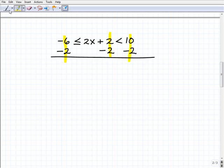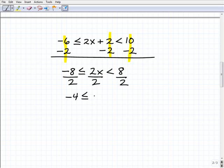Just as if I'm solving an equation, I'm going to add down. I get negative 6 plus negative 2, negative 8 is less than or equal to 2x. This is less than 10 plus negative 2 is 8. So now I need to divide everything by 2 to get x by itself. And by the way, if I was divided by a negative 2, the inequality symbols would switch. That's not the case here. So I'm going to get negative 4 less than or equal to x less than 4. So this is my solution.